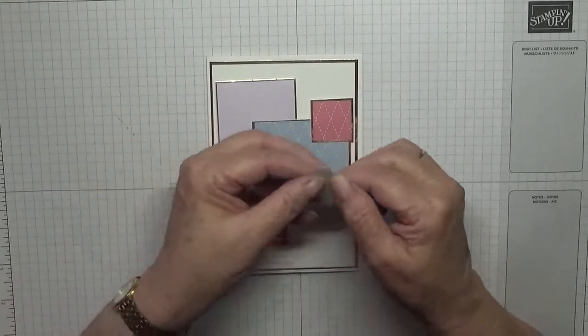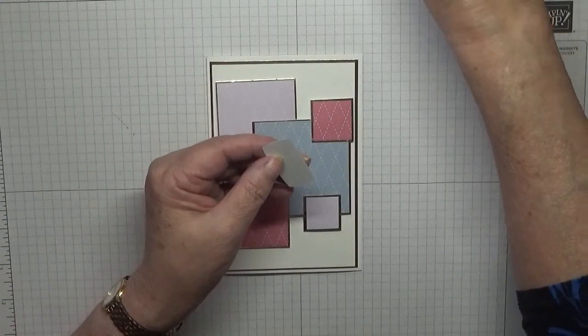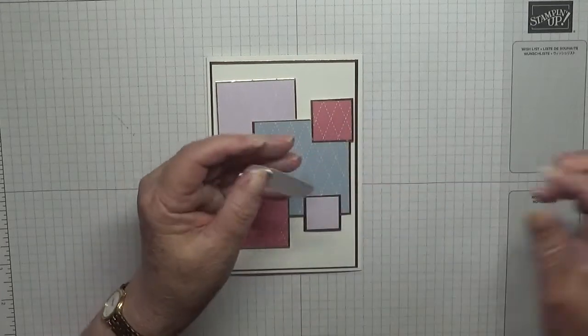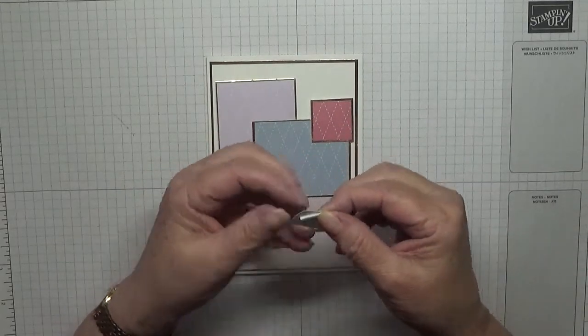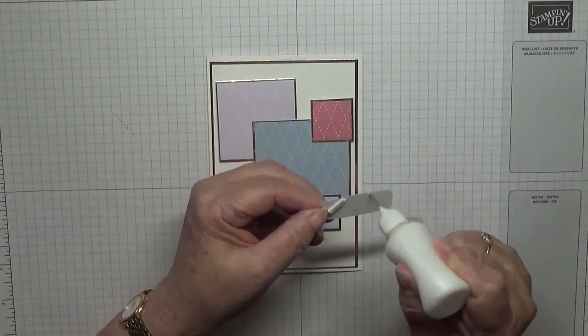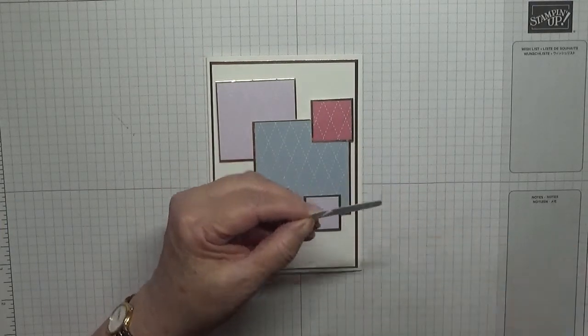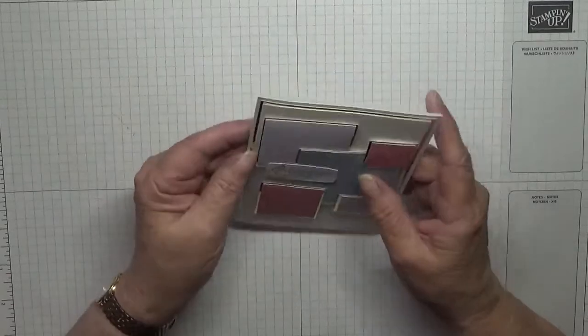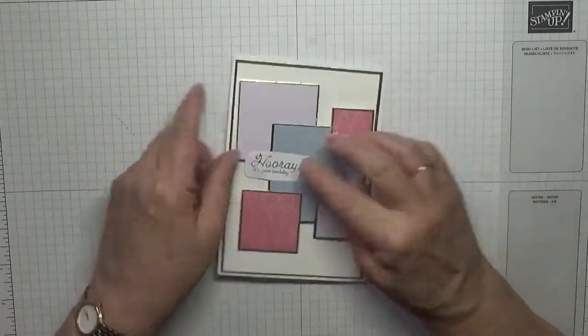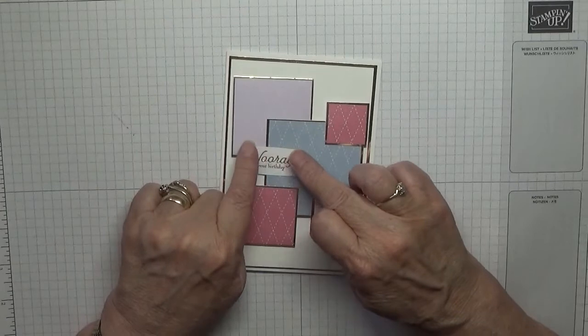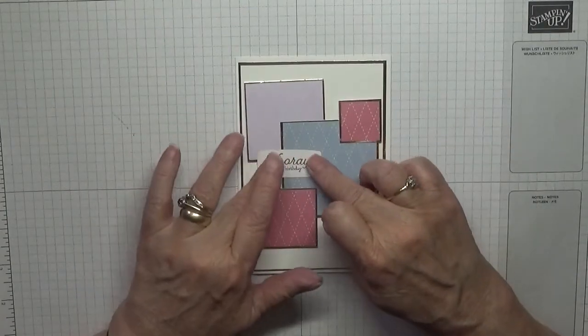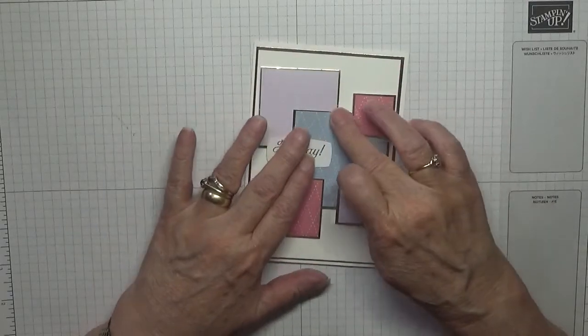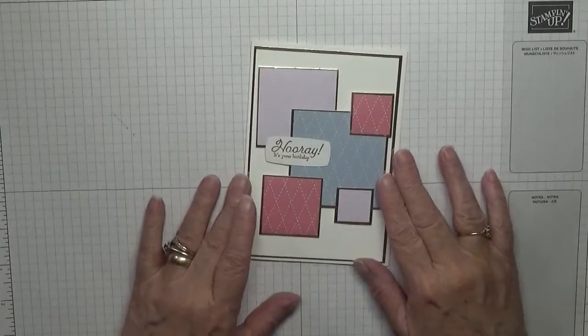And then the sentiment we'll put there. I only need a little bit of dimensional just there, which I will use a bit of that, and then glue this bit. There was a card last week with me doing all these sentiments where I embossed and cut out the sentiments. If you go back to that card you'll see what I did.